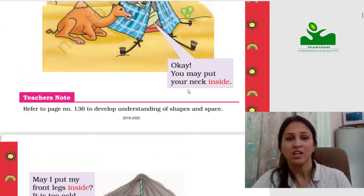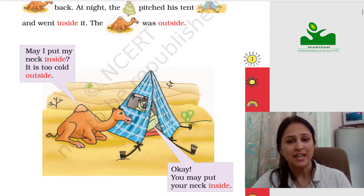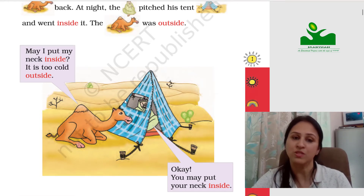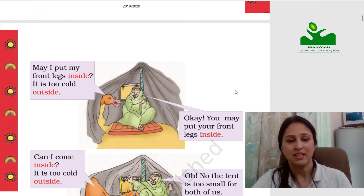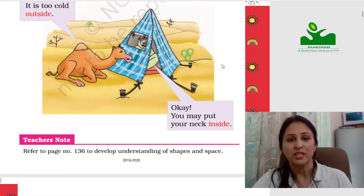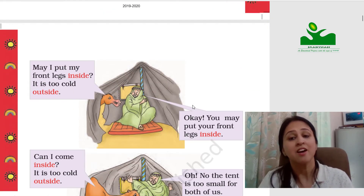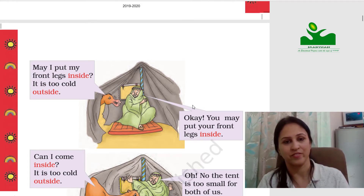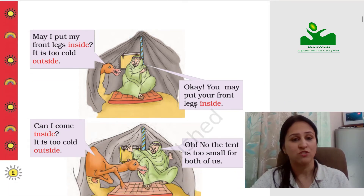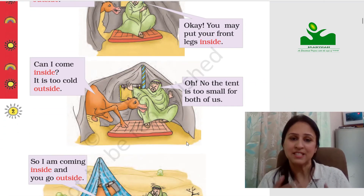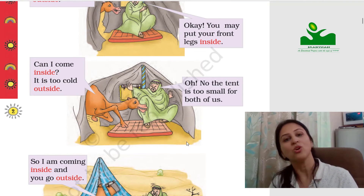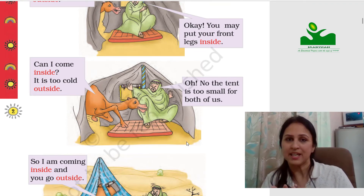So did you see in the story? In the beginning of the story, who was inside the tent? The Arab was inside the tent. And who was outside the tent? It was the camel who was outside the tent. Then the camel put his neck inside the tent. After some time he put his front legs inside the tent. And after that, since he was feeling very cold, he went inside the tent and asked the Arab to go outside the tent.